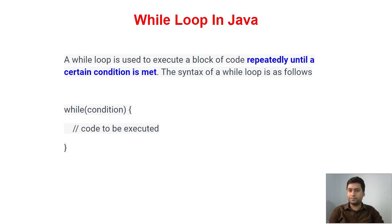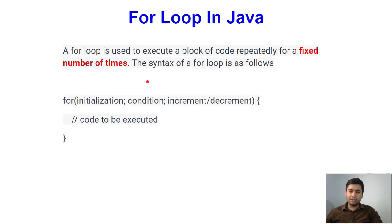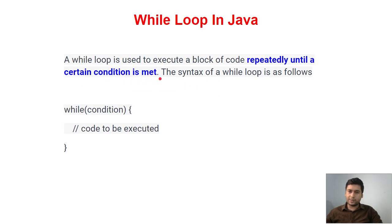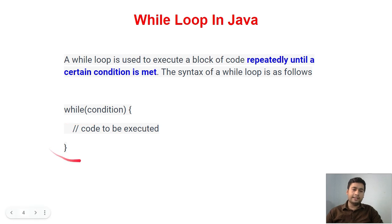What about the while loop? A while loop executes a block of code repeatedly until a certain condition is met. Based on the condition, it will stop. The for loop runs a fixed number of times; the while loop is based on a condition. The syntax is: while(condition) { // code block }. Based on this condition, it will execute multiple times.